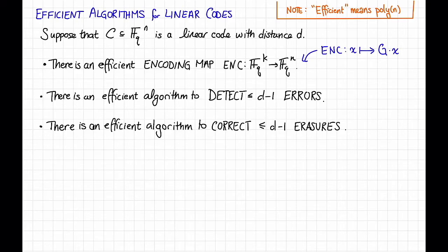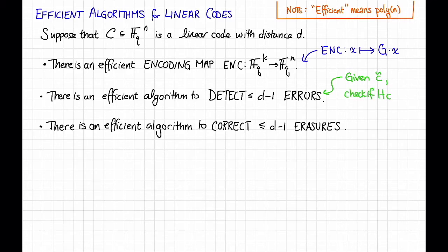The second thing we can do efficiently for a linear code is detect up to d-1 errors. That is, if we see a corrupted codeword c̃ which is corrupted with fewer than d-1 errors, there is an efficient algorithm that will flag it. One way to do this is with the parity check matrix. Given c̃, we can just check if H times c̃ is equal to 0. If it is, we say c̃ is a legitimate codeword; if not, we say something went wrong. This is efficient because all we need is a matrix multiplication.